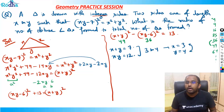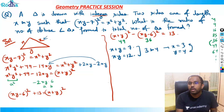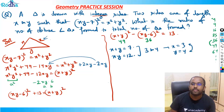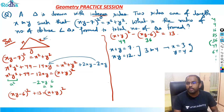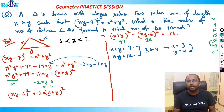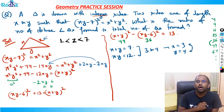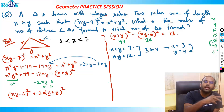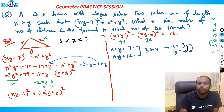Now, for the third side Z: Z must be greater than the difference of the two sides — that is, greater than 4 - 3 = 1 — and less than the sum of the two sides, which is 3 + 4 = 7. So Z can be 2, 3, 4, 5, or 6 — giving us 5 total triangles.